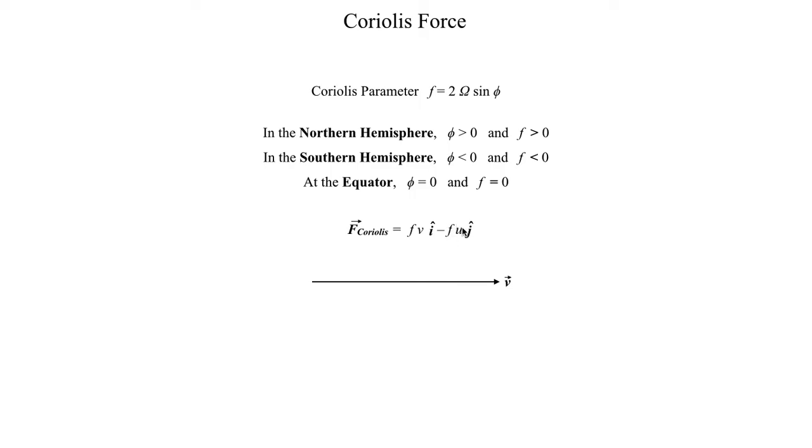So we have a positive times a positive here, times this negative. So we have a Coriolis force acting in the negative j-hat direction. Negative j-hat direction means we're going in the negative meridional direction, which means, based on the meteorological convention we defined in lecture one, our Coriolis force should in fact be directed toward the south, which matches up with our conceptual framework.